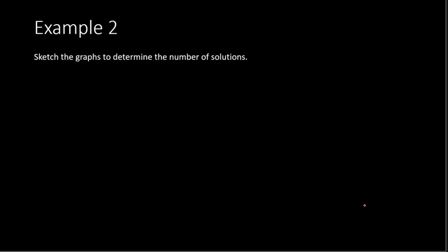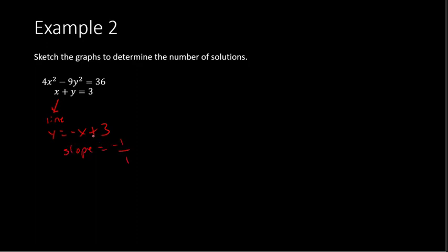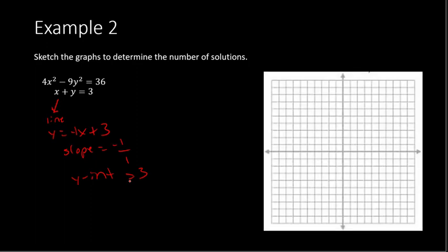Let's try another example. We're given two equations and asked to sketch the graphs to determine the number of solutions. The equation x plus y equals 3 is linear, so it creates a line. Rearranging gives y equals negative x plus 3, where the slope is negative 1 and the y-intercept is 3. We go up 3 to the y-intercept, then down 1 and right 1 to follow the slope, and connect the dots to get the line.